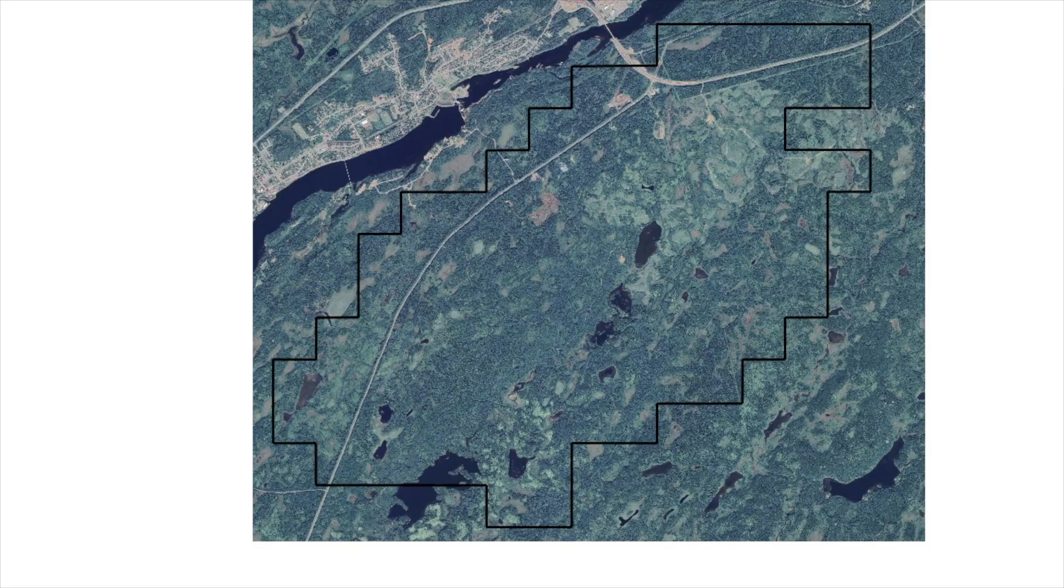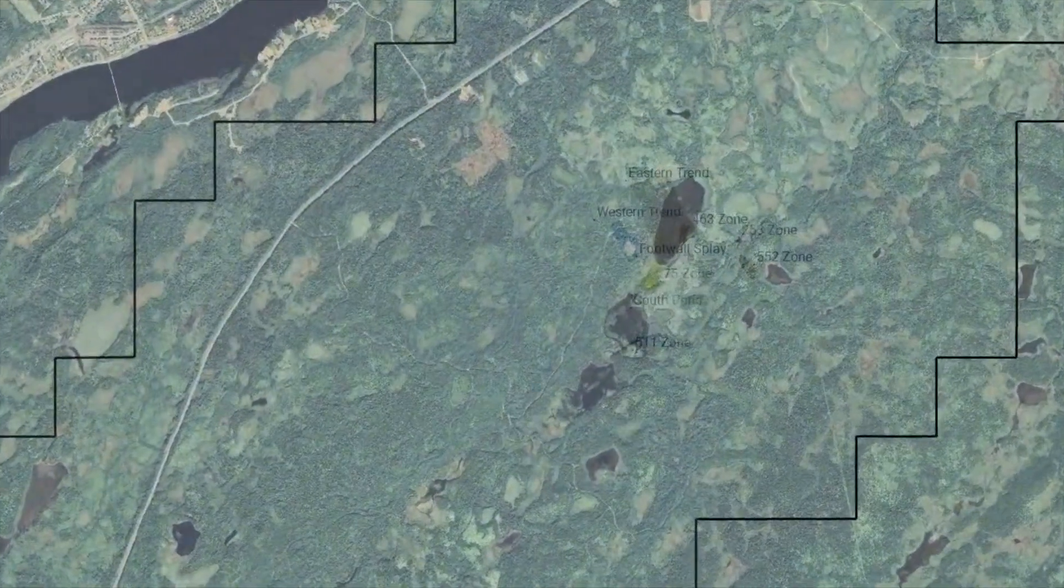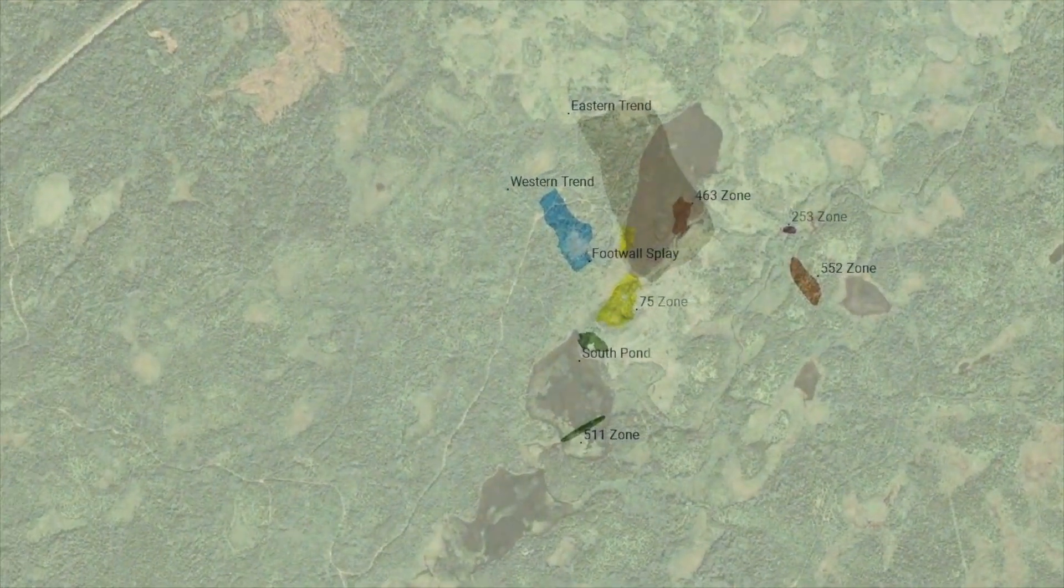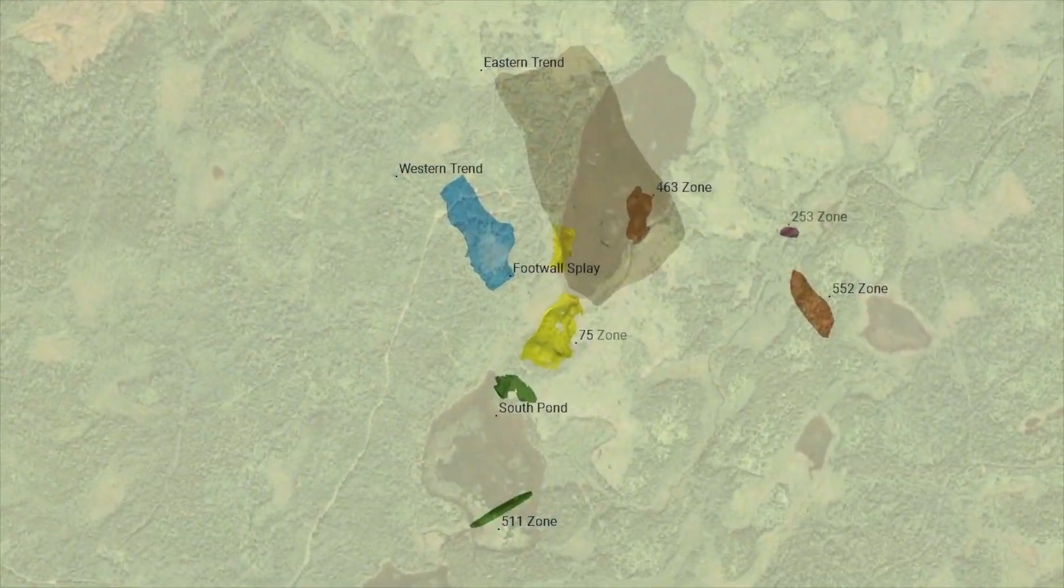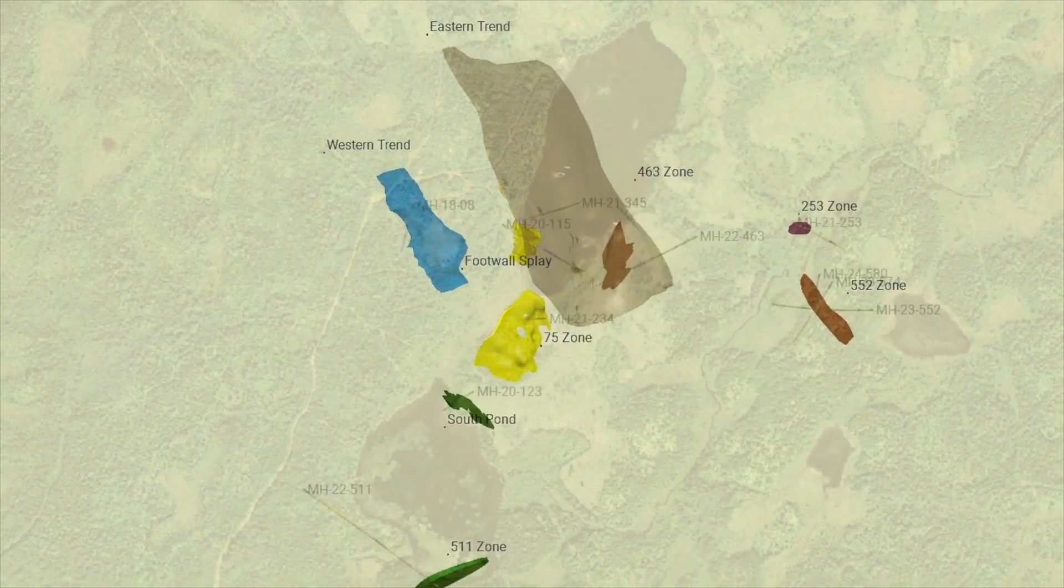We have easy access to the property with the Trans-Canada Highway cutting across the northernmost portion of our property. Our footwall splay Eastern Trend Zones at North Pond is approximately two kilometers from the Trans-Canada Highway and easily accessed by logging roads.